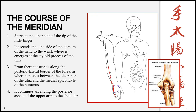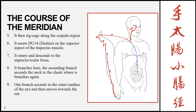From the dorsal aspect of the hand, it passes the styloid process and then continues ascending all the way up to the elbow, where it passes between the olecranon of the ulna and the medial epicondyle of the humerus — passing between the two. Then it continues ascending up the posterior and lateral aspect of the upper arm all the way to the shoulder. From the shoulder, it zigzags along the scapular region in an up-and-down motion.